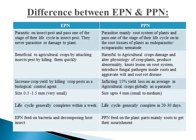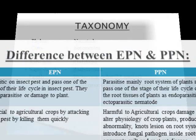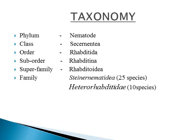The EPN life cycle generally completes within a week. But in the case of plant parasitic nematodes, it takes about 2 to 3 weeks, sometimes even 4 weeks, to complete the life cycle. EPN feeds on bacteria and the decomposing host insect, having a very close association with bacteria, whereas plant parasitic nematodes feed on plant parts, mainly the roots.